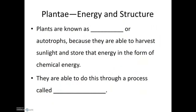Plants are known as producers or autotrophs. This is because they are able to harvest sunlight and store that energy in the form of chemical energy. They convert solar energy, typically into sugar, and they are able to do this through a process called photosynthesis.